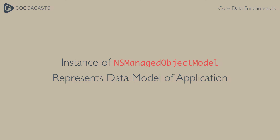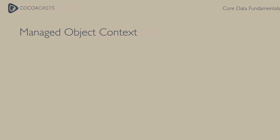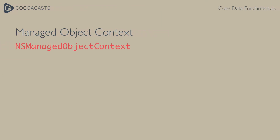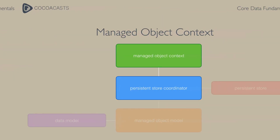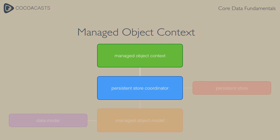A managed object context is represented by an instance of the NSManagedObjectContext class. A Core Data application has one or more managed object contexts. Each managed object context manages a collection of model objects — instances of the NSManagedObject class. The managed object context receives the model objects through a persistent store coordinator.